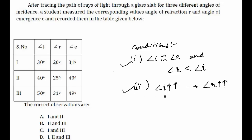Now checking the second condition: as the angle of incidence increases, the angle of refraction also increases. From 30° to 40°, the angle of refraction increases accordingly. From 40° to 50°, the angle of refraction increases from 25° to 31°. The second condition is also satisfied by all three cases, meaning all three observations are correct. Therefore our answer is D.